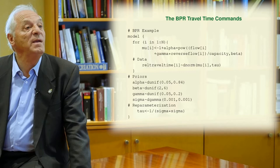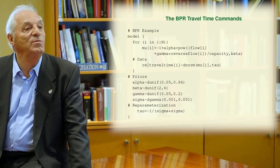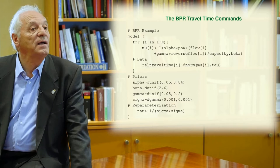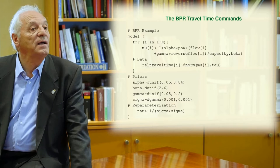And then you write the formula relating this mu value as a function of the parameters alpha, beta and gamma, and the capacity, and the flows r and the reverse flow.